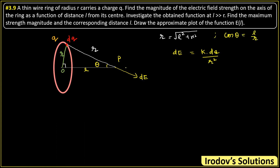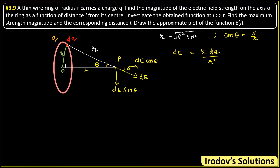There are two components of dE: the component dE·cos theta along the axis, and the component dE·sin theta perpendicular to the axis. As we take all elements on the periphery of the ring, the dE·cos theta components all add up, while the dE·sin theta components cancel by symmetry. So the net electric field is along the axis away from the center, and equals the integral of dE·cos theta.